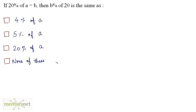If 20% of A is equal to B, then B% of 20 is the same as? We have been given that 20% of A is equal to B. So I can write B is equal to 20 upon 100 times A.